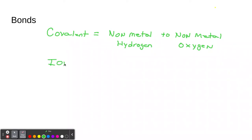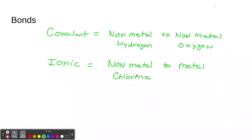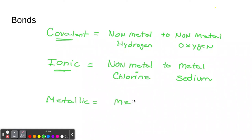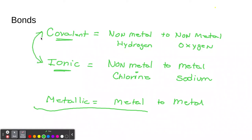Then there are ionic bonds. Ionic bonds are non-metal to metal - that's an ionic bond. For example, a non-metal could be chlorine, and a metal would be sodium, a soft metal. When you put sodium and chlorine together, it makes table salt - that's an ionic bond. And the third one, which we'll talk about in another video, is metallic bonding - metal to metal. So those are the three types of bonds.